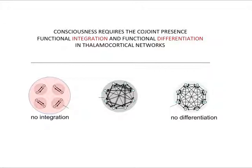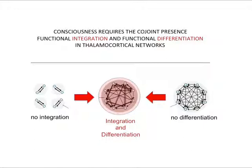Quick example. On the left side, you see a system that has some degree of differentiation, because different elements have a specific set of connections, but the system is clearly modular and not integrated. On the right side, you have a system that is surely integrated because each element is connected to any other, but for this reason it is homogeneous and lacks differentiation. In the middle, you have a balance between the two — each element has a specific set of connections, yet they are all tightly connected through long and short-range connections. This system mimics the general architecture of thalamocortical circuits. According to the theory, this balance is what is lost when we lose consciousness in sleep.